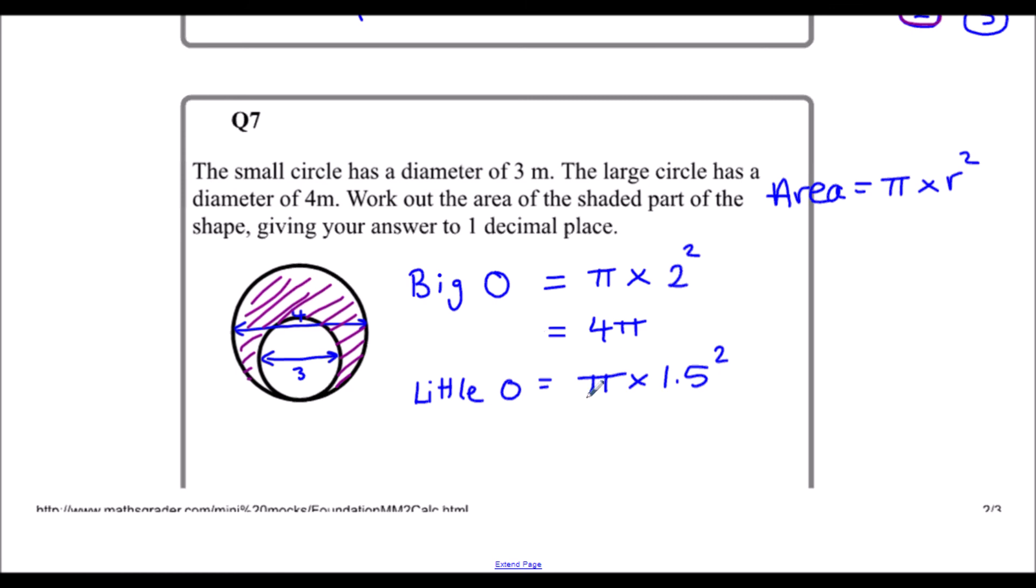That's saying 9 over 4 pi. So to work out the shaded bit I'm going to do 4pi take away 9 over 4 pi. If you've kept your answer in the calculator you can use the answer button and that's saying 7 over 4 pi. And I'm going to press the SD button on the calculator and that will change it to a decimal. I want one decimal place so that's 5.5 meters squared.